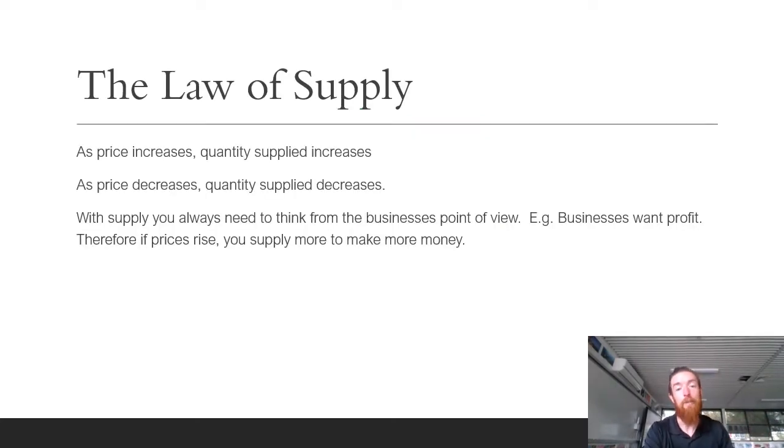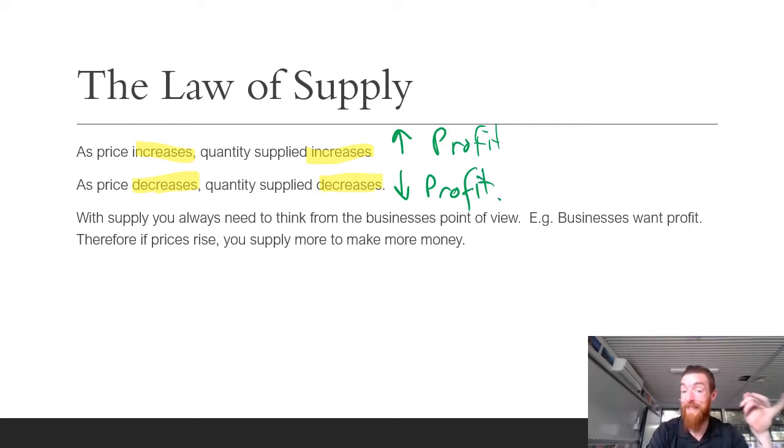So right now with the law of supply as price increases the quantity supplied increases. This is because businesses are going to have increased profit in that instance. So I know some students are already going to be thinking well if the price goes up people won't want to buy it. We don't care about that right now what we care about is if the price increases and all other things are equal businesses are going to supply more because it means they're going to make more profit. And then on the same hand, on the other hand, as price decreases businesses want to supply less because it is less profitable. And that's the main thing there. So you can use either of those as the definition. So with supply you always need to think from the businesses point of view. So for example businesses want profit and therefore if prices rise you supply more to make more money.